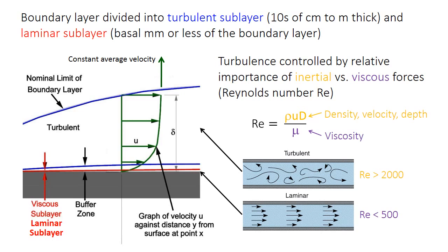Turbulence is technically described by a constant called the Reynolds number, which is the ratio of inertial to viscous forces in that fluid. Turbulent flows have larger Reynolds numbers. The inertial forces have to do with the movement of the water, and so they're strongly influenced by the velocity of the flow — influenced by density, velocity, and depth, but really velocity is the key thing.